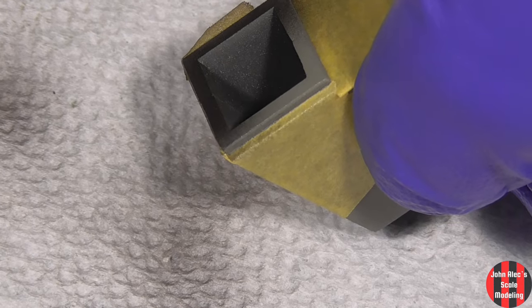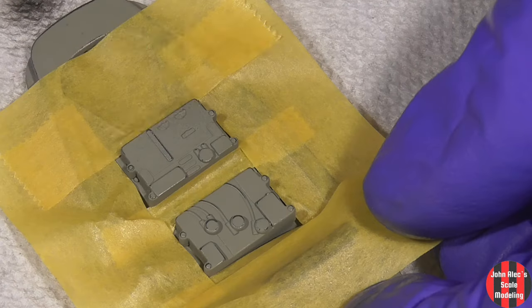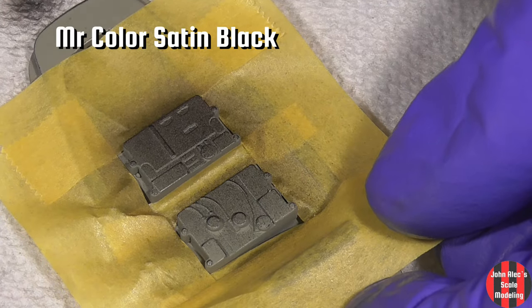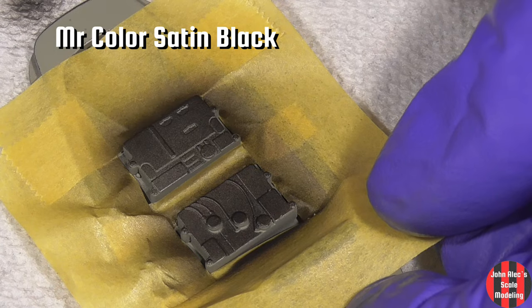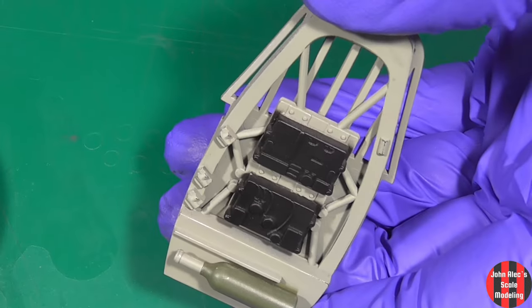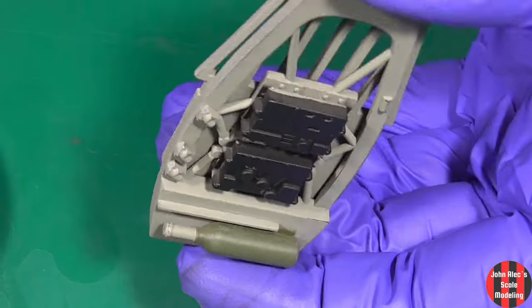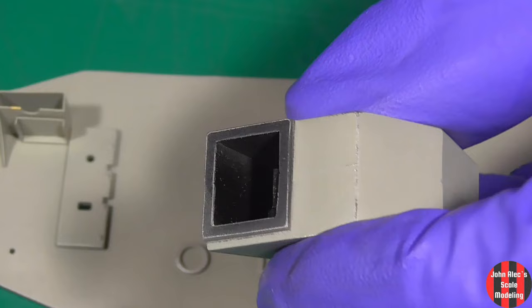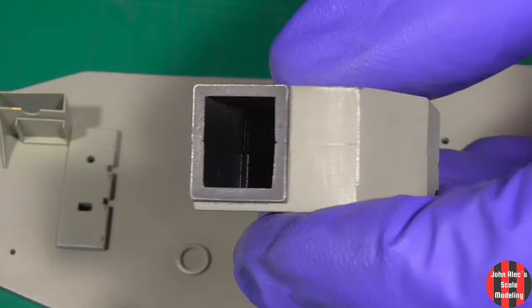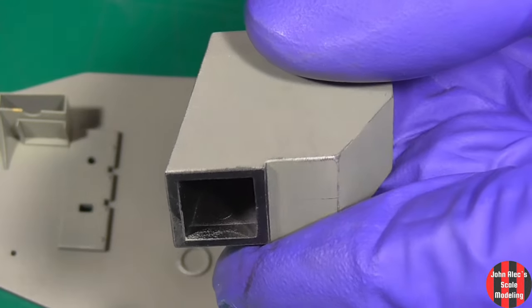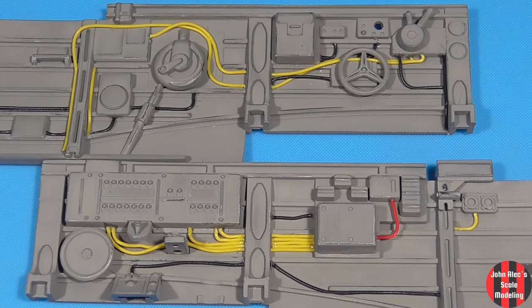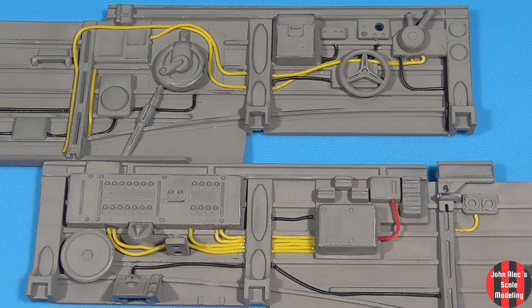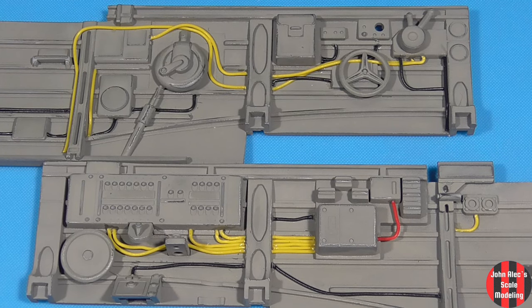This is the spent ammo bin in the rear gunner position. I used 1/24th car ignition wires, which are 28 gauge, to add some more detail.